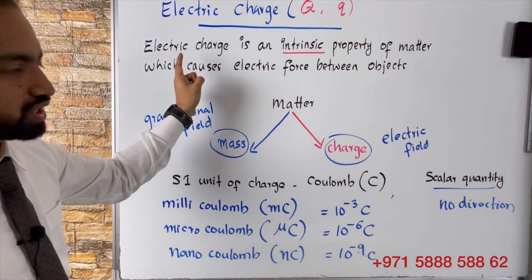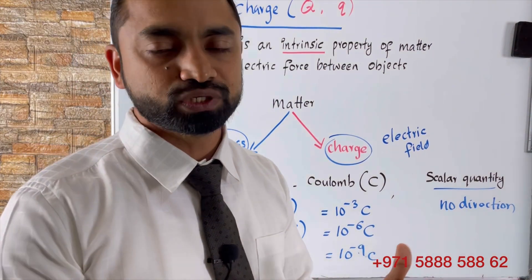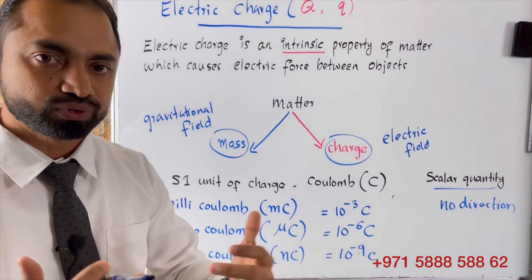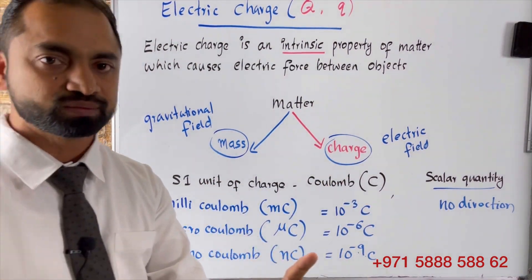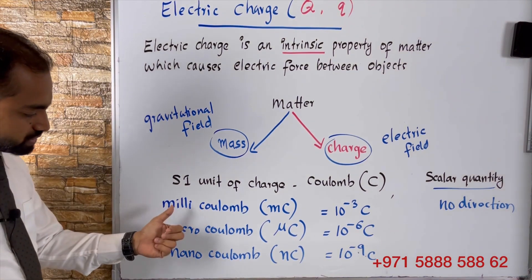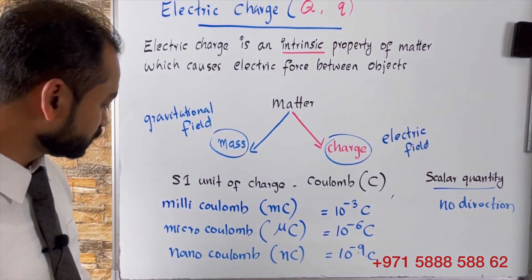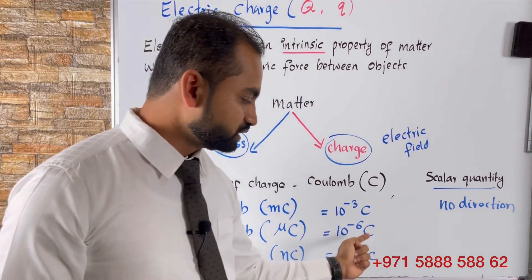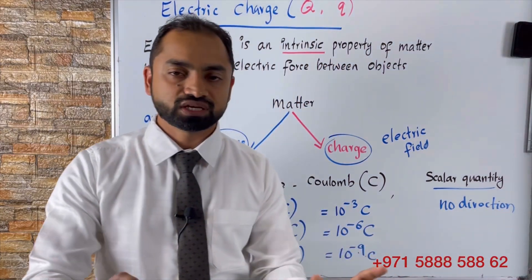So, what is electric charge? Electric charge is an intrinsic property of matter which produces electric force between objects, and electric charge is related to the electric field. The SI unit is coulomb — one coulomb represents a large quantity of charge. To represent smaller charges, we use millicoulomb (10⁻³ C), microcoulomb (10⁻⁶ C), and nanocoulomb (10⁻⁹ C). Electric charge is a scalar quantity, meaning it has no direction.